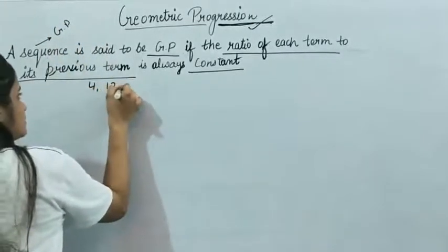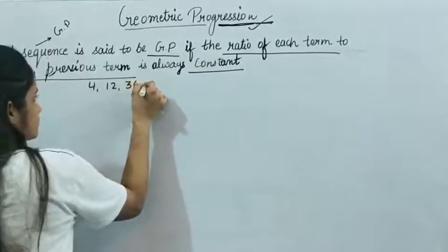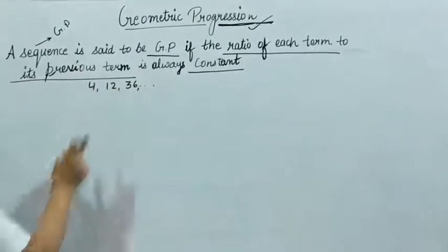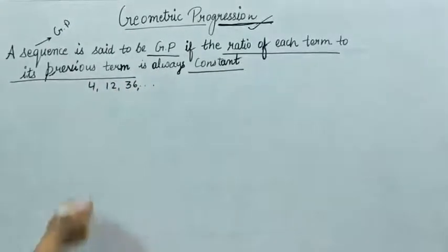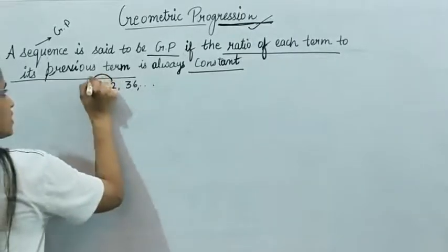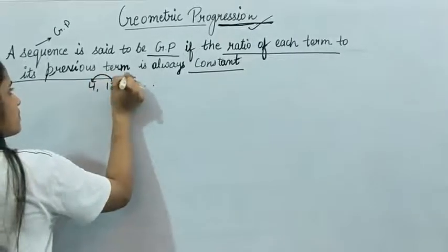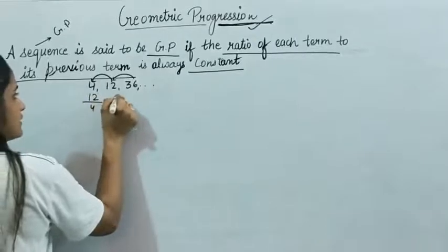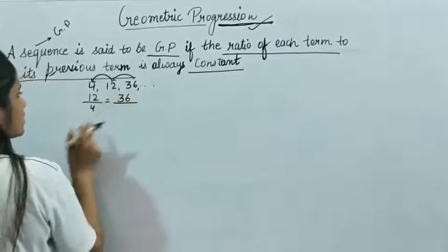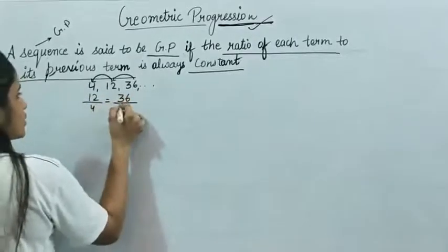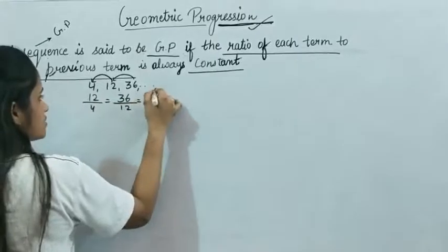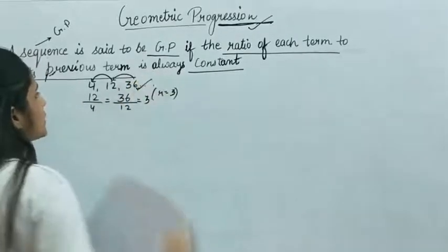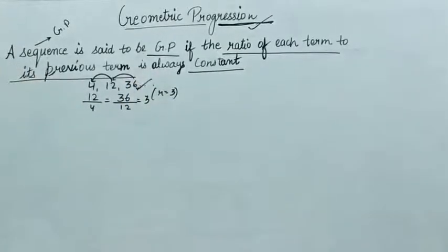For example, if you have a sequence and so on, it is said to be a GP if the ratio of each term to its previous term is constant. Here the common ratio r is equal to 3, so this sequence is a GP.